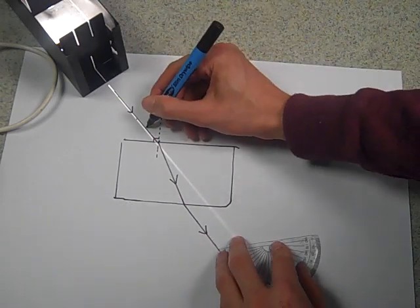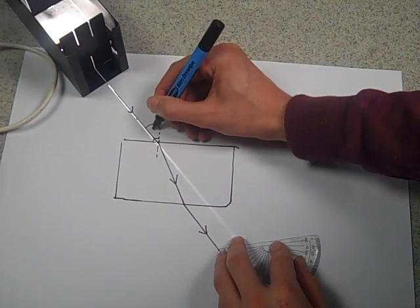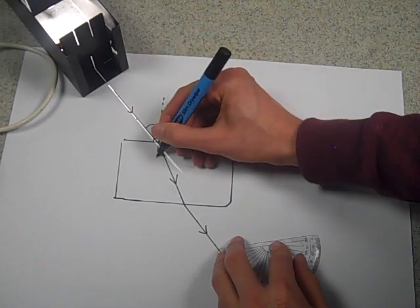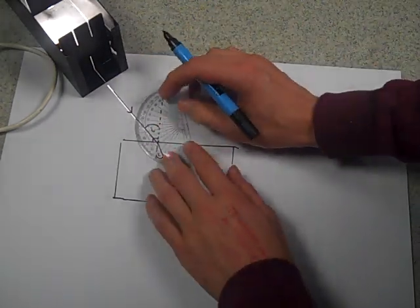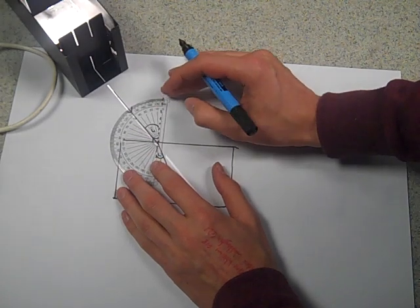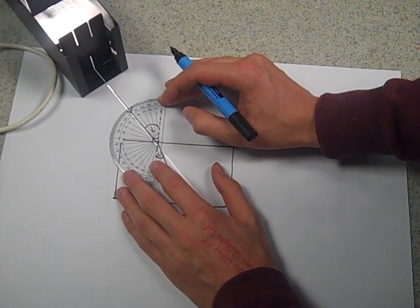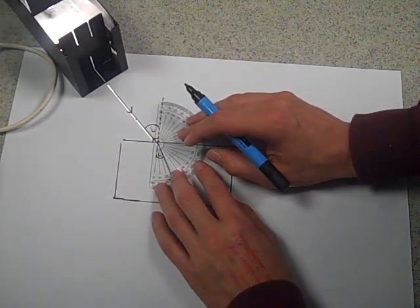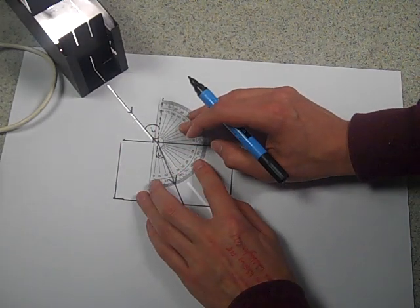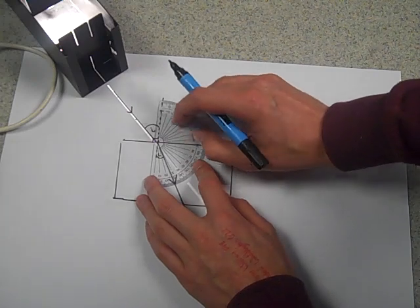Then you can measure, using your protractor, the angle of incidence and the angle of refraction. My angle of incidence is about 47 degrees. My angle of refraction is about 27 degrees.